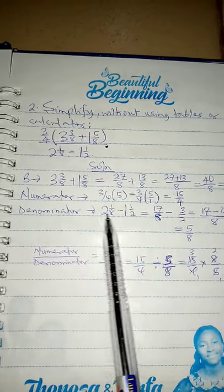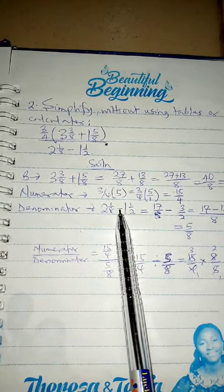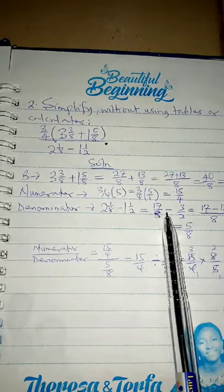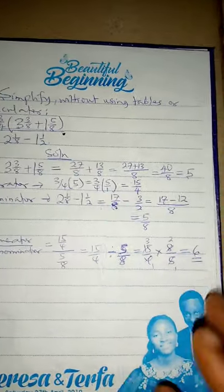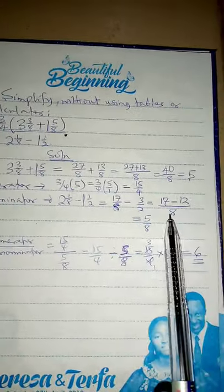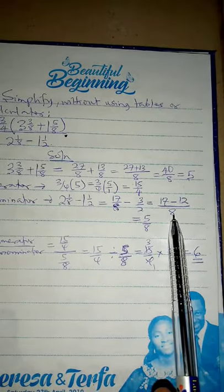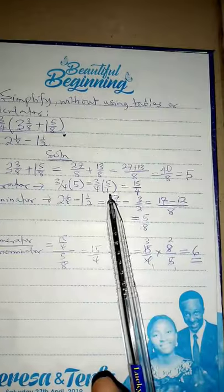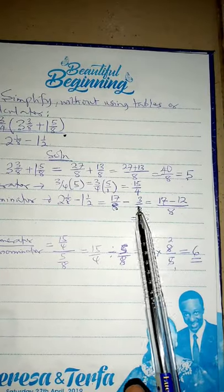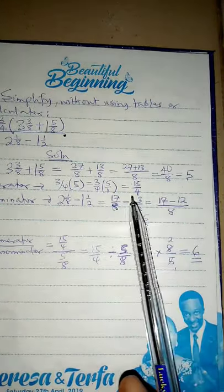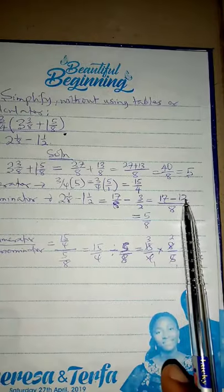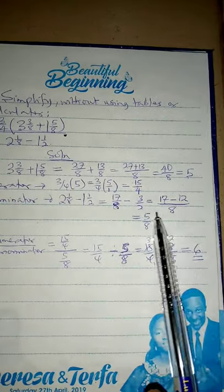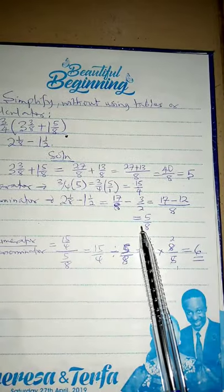For the denominator, turn each to an improper fraction to get 17 over 8 minus 3 over 2. The LCM of 8 and 2 is 8. Eight in eight is 1 times 17 equals 17. Two in eight is 4, times 3 equals 12. So 17 minus 12 is 5 over 8.